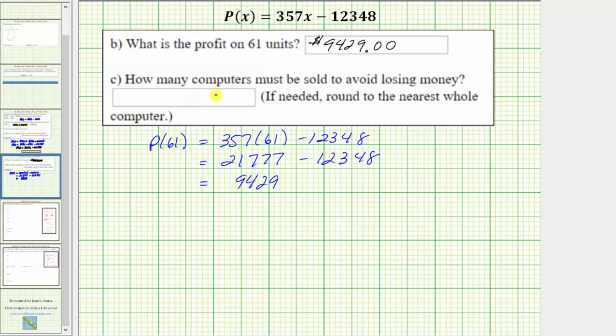And finally for part c, we're asked how many computers must be sold to avoid losing money? When a company doesn't make money or lose money, that's called the breakeven point. And that occurs when the revenue is equal to the cost or when the profit is equal to zero. So to answer this question, we'll set the profit function equal to zero and solve for x. Which would give us the equation 357x minus 12,348 equals zero.